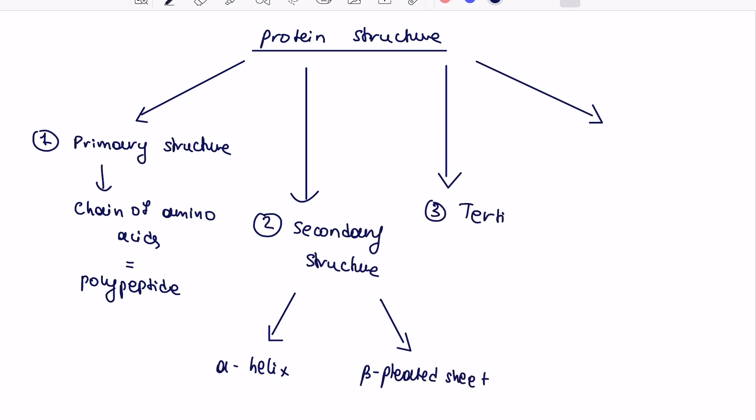Then the third structure of protein is referred to as tertiary structure and this is basically a type of structure that refers to a 3D shape of the protein.